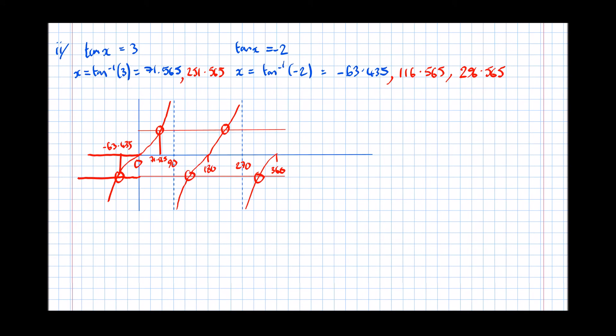So finishing off, summarising all our valid answers, we get x equals. So this one wasn't valid. Minus 63.435 isn't valid. X equals 71.6 to three significant figures. Then the next one numerically, 117 degrees to three significant figures. Then we've got 252 degrees.